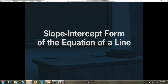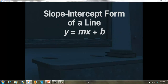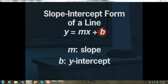The slope-intercept form is the general equation y equals mx plus b. The slope-intercept form is kind of like a template for writing the equation of a line. In the template, m is the line's slope and b is its y-intercept. To write the equation of a line, just substitute its slope for m and its y-intercept for b.